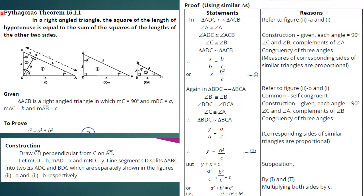Assalamu alaikum students. In today's video we will learn chapter 15, theorem 15.1.1. The question is: in a right angled triangle, the square of the length of the hypotenuse is equal to the sum of the squares of the lengths of the other two sides.